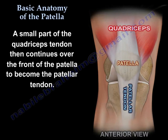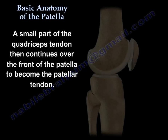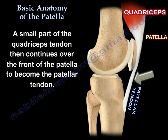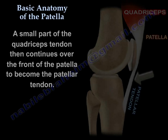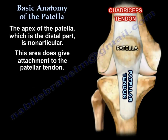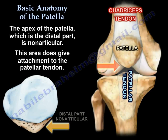A small part of the quadriceps tendon then continues over the front of the patella to become the patellar tendon. The apex of the patella, which is the distal part, is non-articular. This area does give attachment to the patellar tendon.